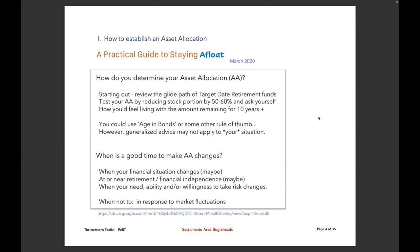Most advisors would say after a life change — having a baby, getting married, moving house, approaching retirement — that's a good time to make an asset allocation change. But perhaps the best encapsulation of that assessment comes from Larry Swedroe: when your need, ability, and/or willingness to take risk changes.